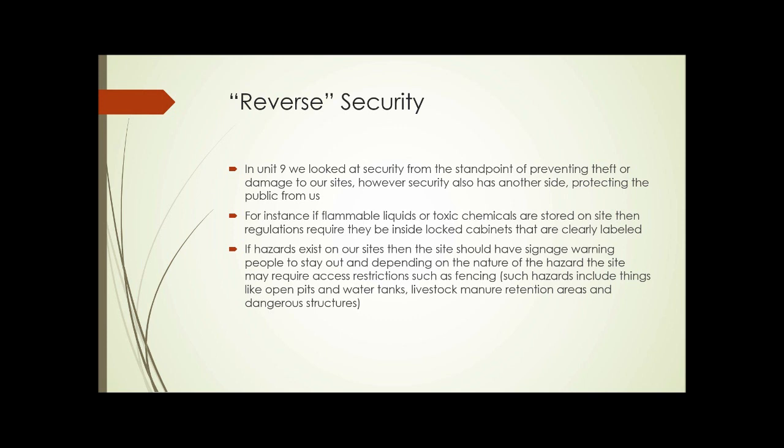Any number of assorted chemicals fall into that category. Environmental regulations and safety regulations — OSHA — require that they be kept inside locked cabinets that are clearly labeled as containing flammable or toxic materials. If we have hazards on our sites, the site should have signage warning people to stay out, and depending on the nature of the hazard, the site may require access restrictions such as fencing.